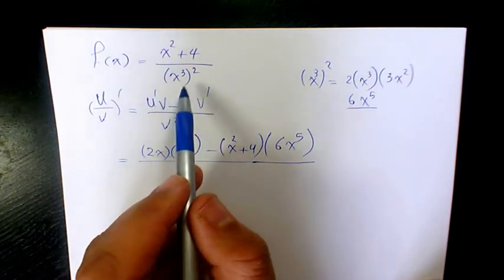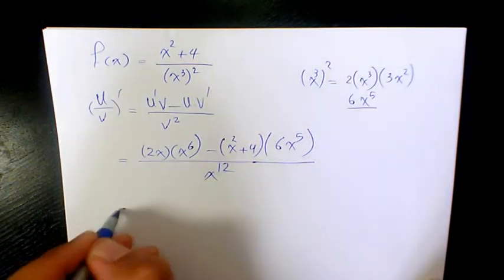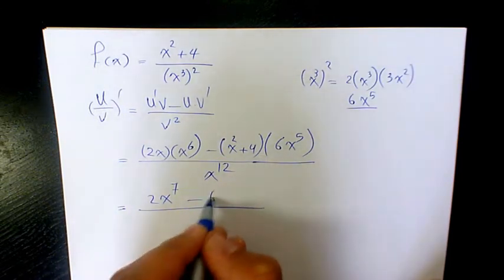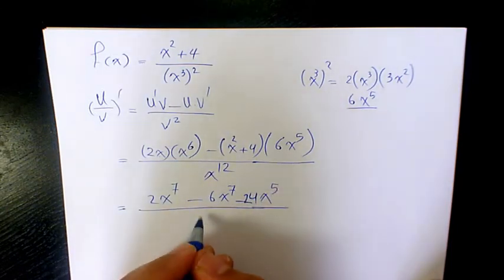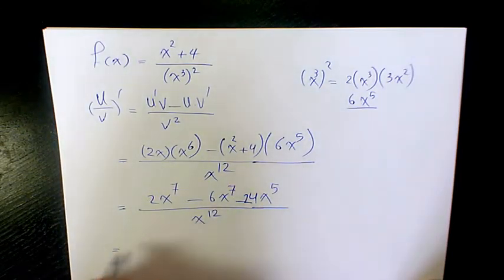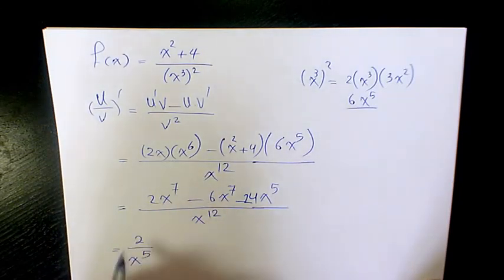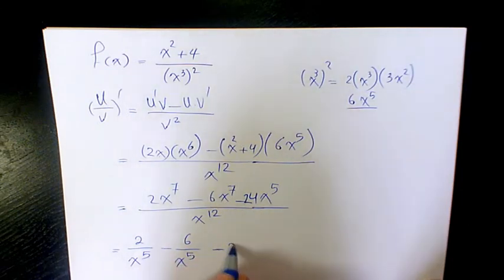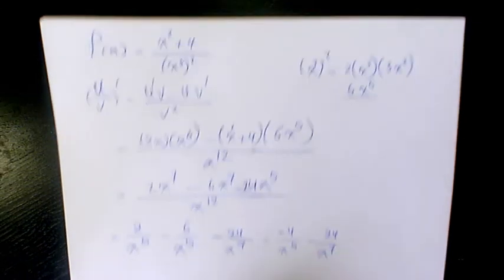Divided by v squared, which is x to the power of 6 to the power of 2, giving x to the power of 12, because 6 times 2 is 12. So we have 2x times x to the power of 6, which is 2x to the power of 7, minus 6x to the power of 7, minus 24x to the power of 5, all divided by x to the power of 12. When you simplify, 2x to the power of 7 over x to the power of 12 is 2 over x to the power of 5. Then 6 over x to the power of 5, minus 24 over x to the power of 7. So 2 minus 6 gives negative 4, over x to the power of 5, minus 24 divided by x to the power of 7. That's the final answer.